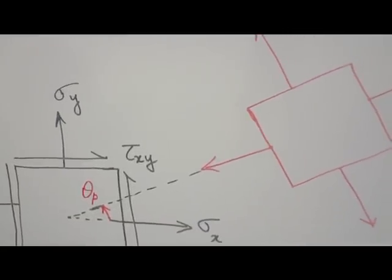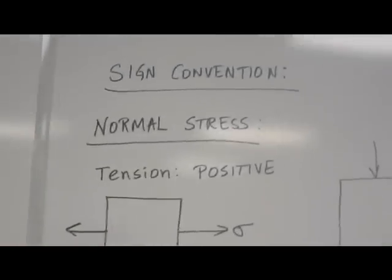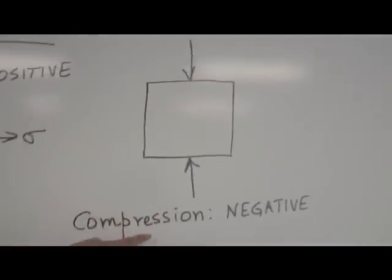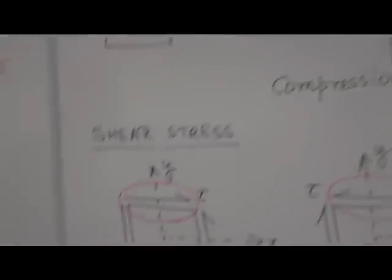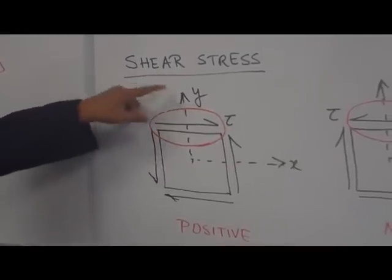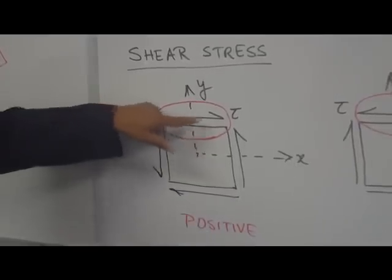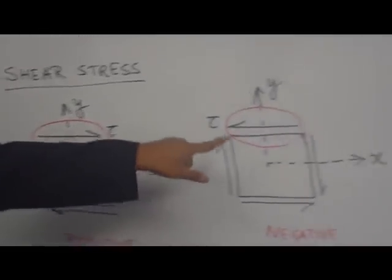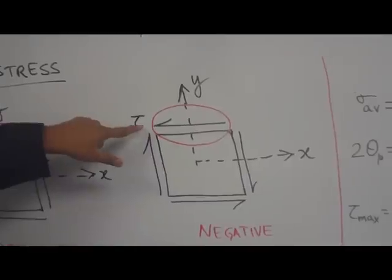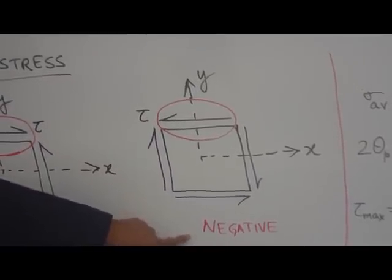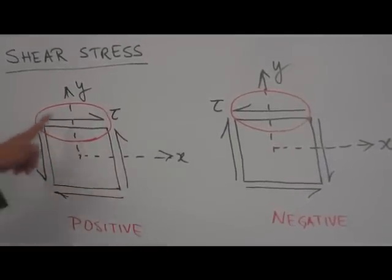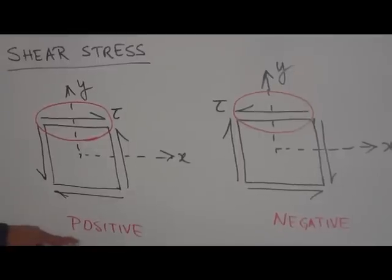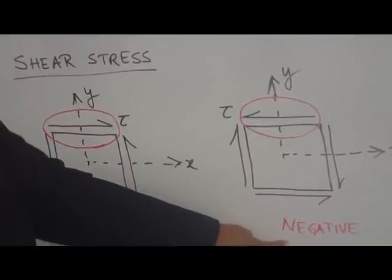Let us look at the sign conventions used here. For normal stress, if it is a tension stress we call it positive; if it is a compression stress, we call it negative. For shear stress, it is a simple sign convention: look at the top plane. If that shear is acting in the positive x direction, you call it positive shear. If that stress on the top plane is acting in the negative x direction, you call it negative shear stress. For pure shear, just look at the top plane — if the shear is in the positive x direction, it is positive shear; if along the negative x direction, it is negative. It is very important to notice that.